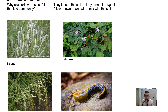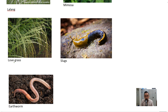Lalang looks like this — these are its seeds, and they reproduce by flying through the wind because they are very light and have hair. This is a mimosa plant; its leaves will close up when you touch them and it can sting. These are its flowers. Love grass is also commonly found in Singapore — its seeds can easily catch on your pants or on an animal's fur, so they disperse by animals.